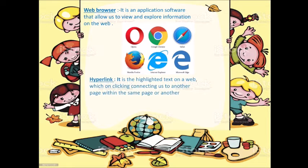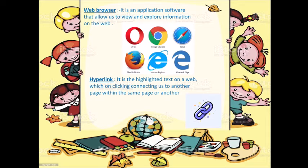Next is hyperlink. A hyperlink links to another place in the same document or an entirely different document or other resources. It is highlighted text on a web page which, on clicking, connects us to another page within the same page or another. You can see the images of hyperlink.